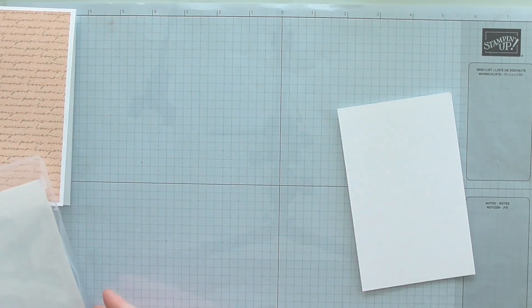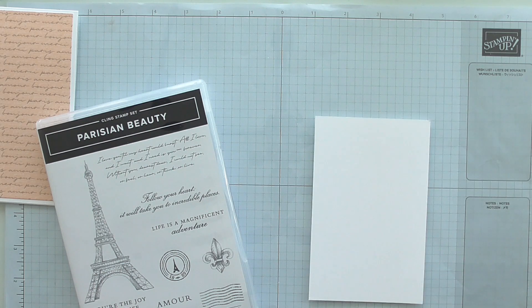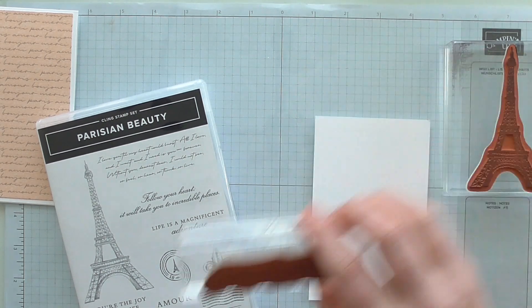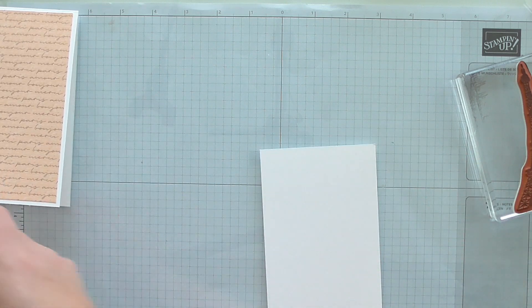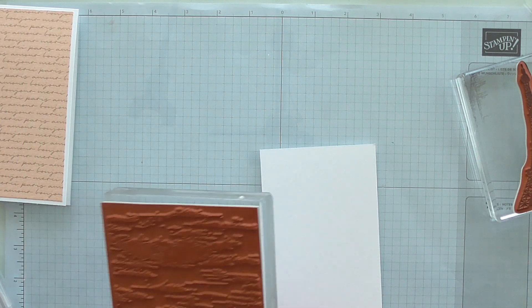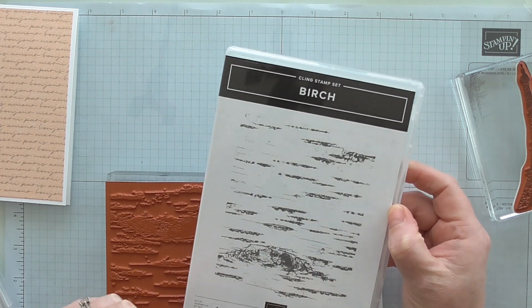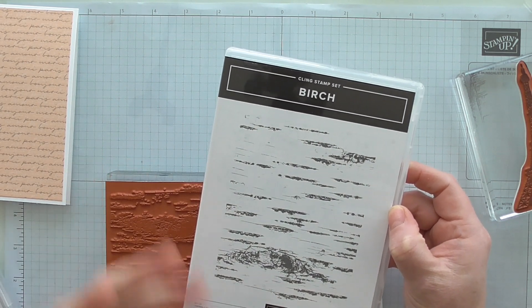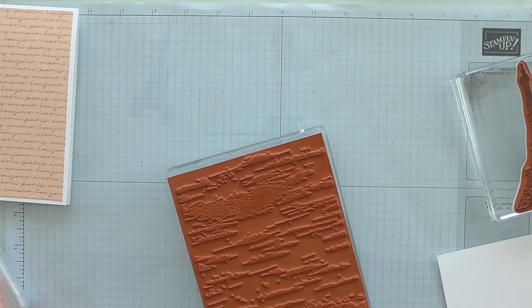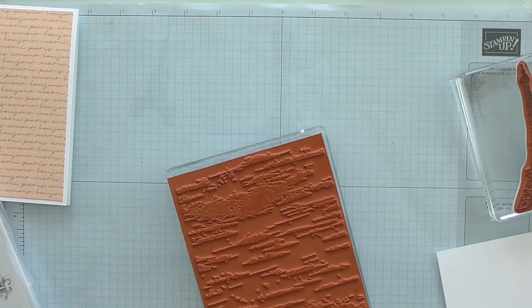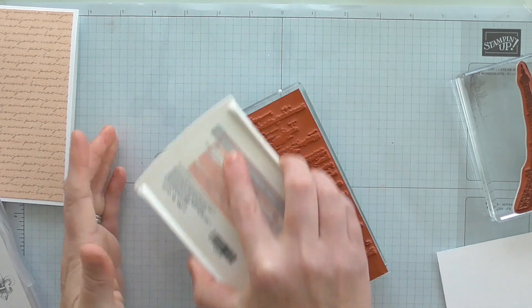We're going to do some stamping now. I've already mounted my Eiffel Tower, I've got the word script and thank you. But first of all I want to do a small background and for that I'm using a stamp set that I already have in my stash called Birch. This is available in the larger annual catalogue because although we've got the new items coming in January, the main catalogue runs right through till June till the summer.